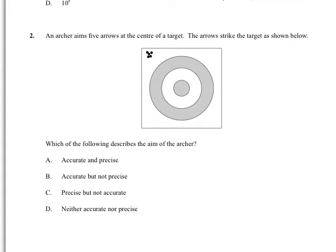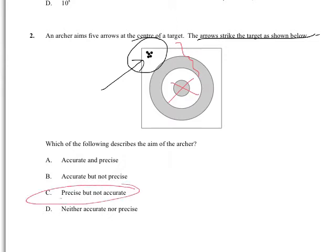Question number two, which is about accuracy and precision. We have arrows striking a target really close together. So we'll have a precise situation, but the target is here. So we've got a very inaccurate situation. So the answer will be C, because it's precise, they're all together, but not accurate.